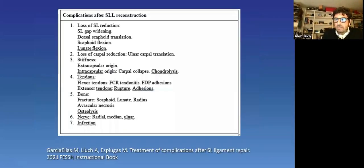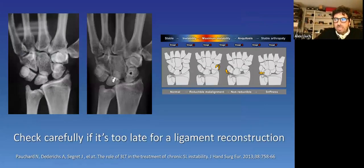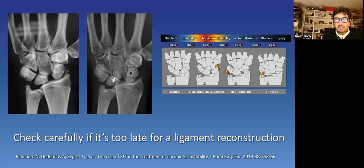This is a list of complications that can appear after scapholunate ligament reconstruction. You will be able to find it in a chapter of next year's FESSH instructional book, and I'll try to make it a little bit more simple. The most common mistake we have done is performing a ligament reconstruction where it was not indicated. That means when we had a collapse rather than an instability, when we were here in our table instead of being here, like in this case, that was a collapse and any ligament reconstruction had great chances of failure.